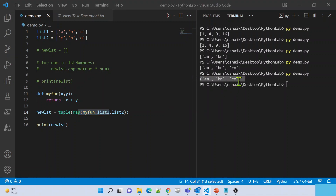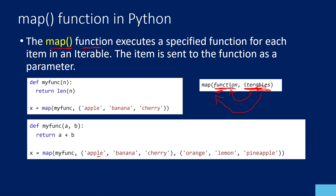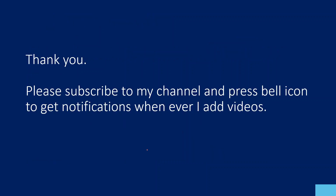So map function is very useful — you pass an iterable and a function name, every item in the iterable is processed through the function logic, and the output is returned as an object. I hope you enjoyed this video and got a clear idea about how the map function works. Thank you for watching — please subscribe to the channel and press the bell icon for notifications.